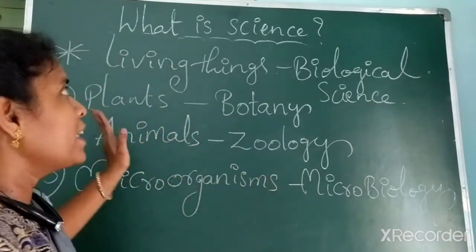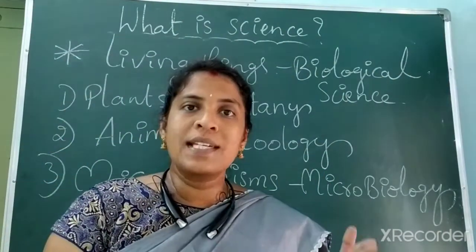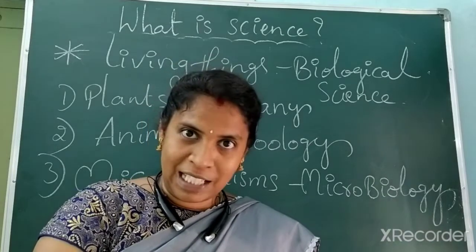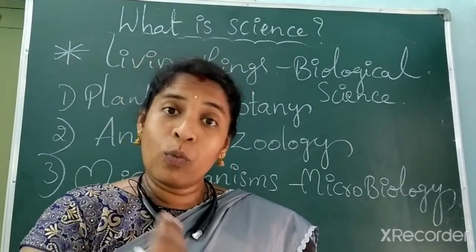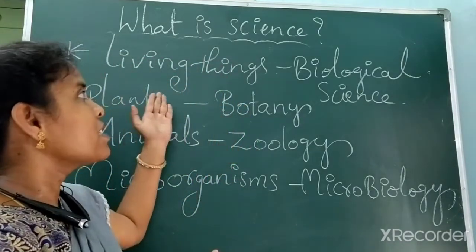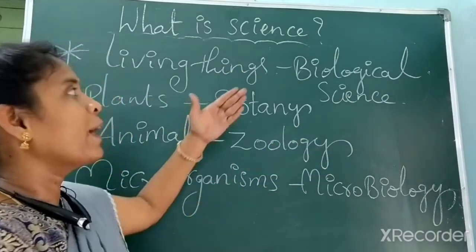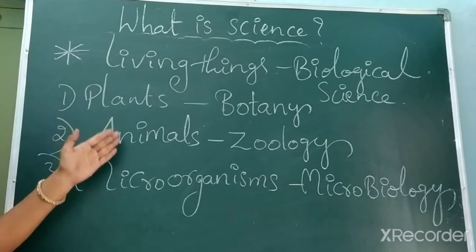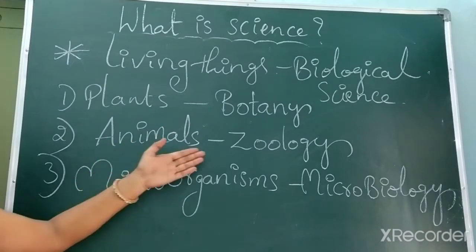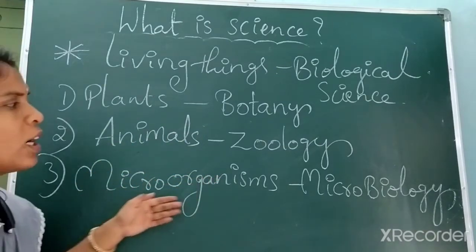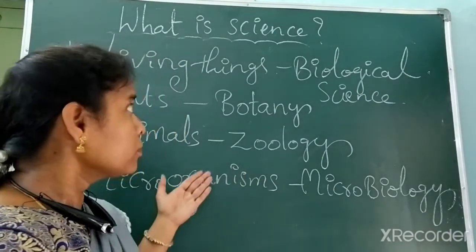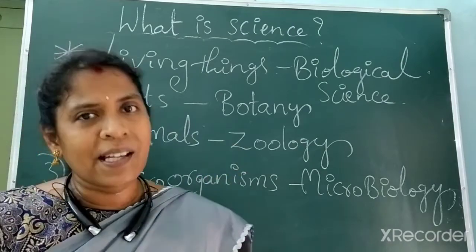So, in what is science: science is a study which deals with the study of nature. In this nature, there are living things and non-living things. The study of non-living things is physical science, and the study of living things is biological science. In biological science, we study about plants, animals, and microorganisms. Study of plants is called botany, study of animals is called zoology, and study of microorganisms is called microbiology. Next, we look at why we study science.